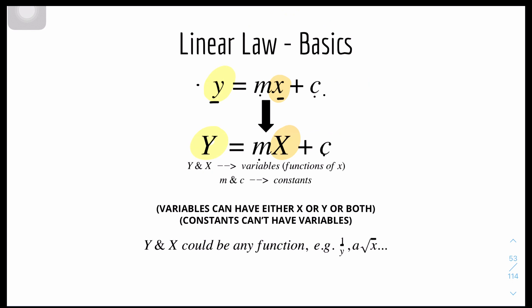Basically it's quite similar, but the big Y can be anything like any variables. Big Y and big X are variables and they are functions of x, whereas m and c stay the same as constants. Variables can have either x or y or both, and constants like m and c can't have any variables.